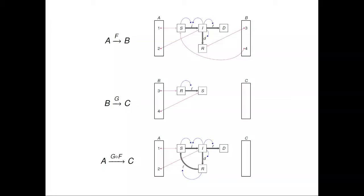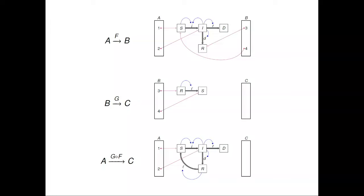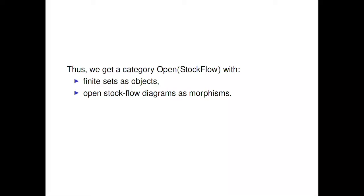You get a category — I'll call it Open Stock Flow — that has finite sets as objects and open stock flow diagrams as morphisms. That's our syntax, the stuff that you draw on paper. And then what does it mean? What's the semantics? We're going to construct another category, Open Dynam, of open dynamical systems, and a functor from Open Stock Flow to Open Dynam that will extract the differential equation from the stock flow diagram.